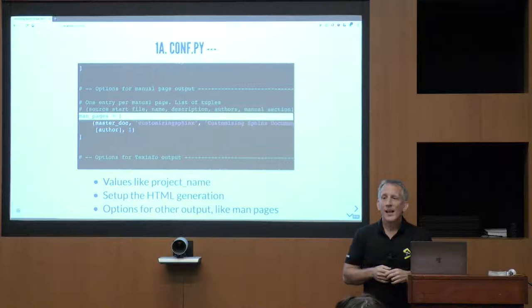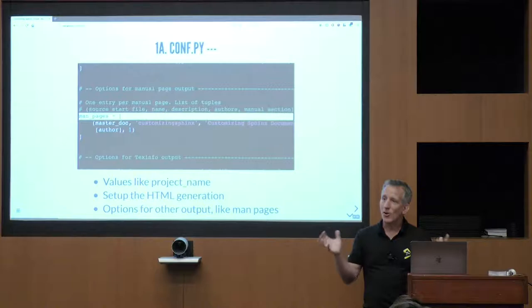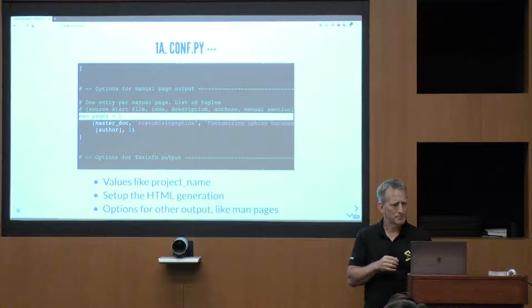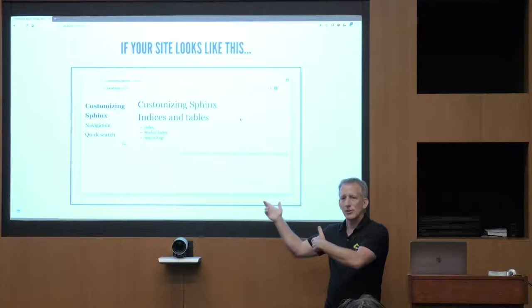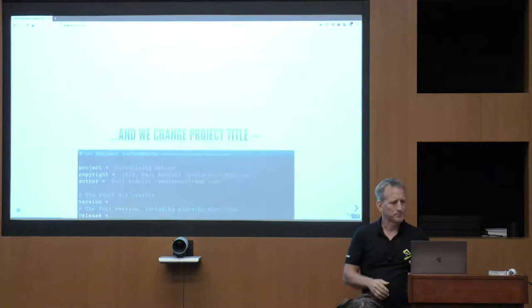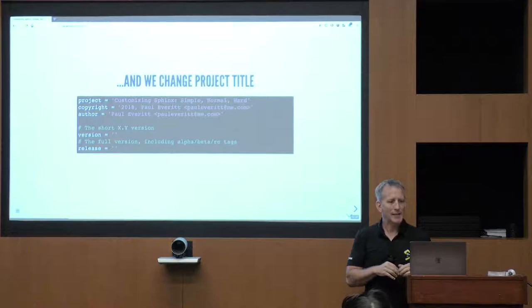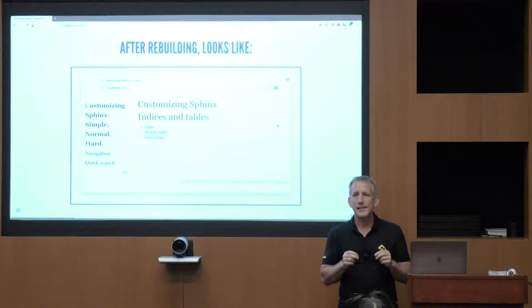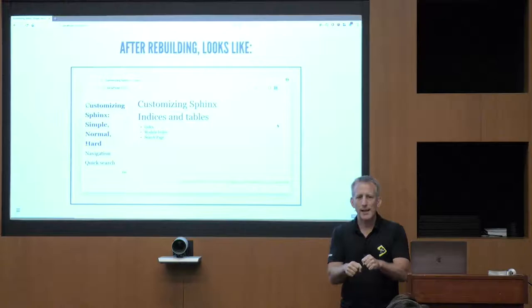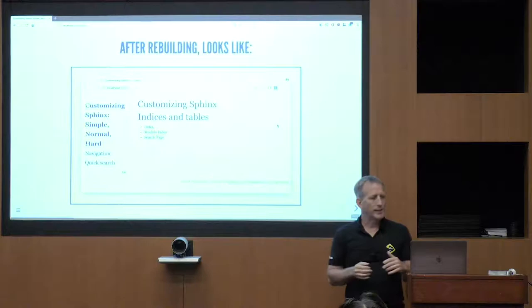The configuration file also gives you knobs for creating man pages. So if your site looks like this — this is what it looked like when I ran the Sphinx command without changing anything. If I go and change that variable, I get a different result. I've edited a variable in a Python file, rerun a command, and my HTML site now has that on every single page. That's the simplest customization you can do: edit a value that already exists.